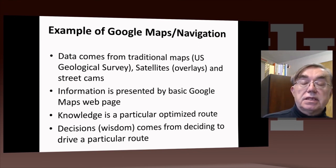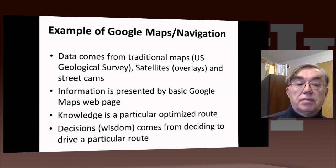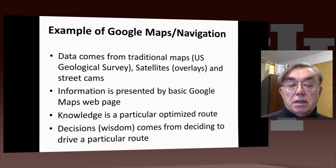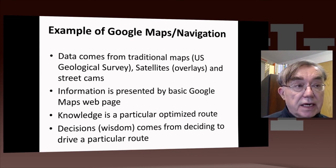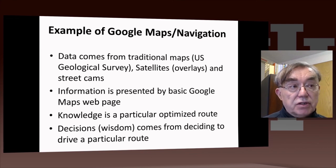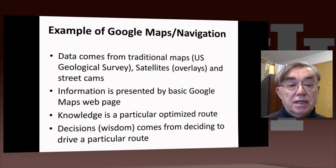We see in this simple case how we go from more data through to decisions. Note that the actual routing algorithm is pretty non-trivial — deciding what the optimal route is is quite difficult.